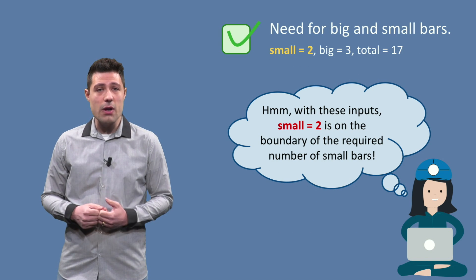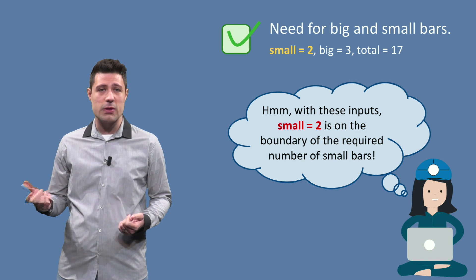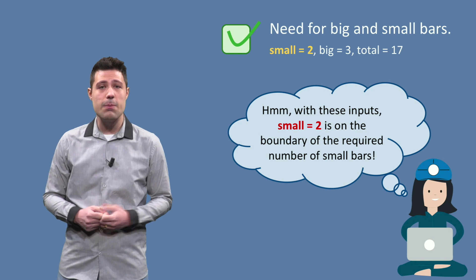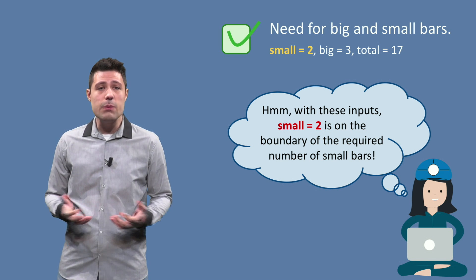This means we have thought about this partition, but apparently the instance we used to represent this partition, small 5, big 3, total 17, was not enough. We need more tests.